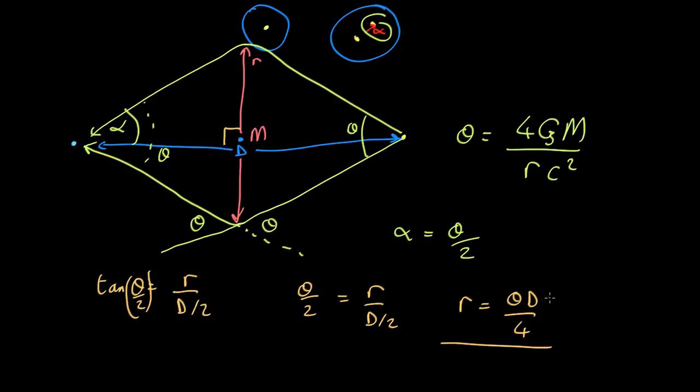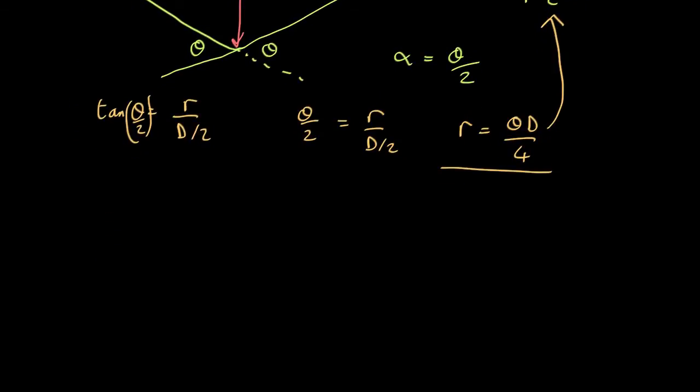So what we can do is substitute this one in here. We've got two unknowns, r and theta, and two equations. So that should be solvable. And we end up with theta equals 4gm times 4, all over d theta c squared. So 4 times 4 is 16.